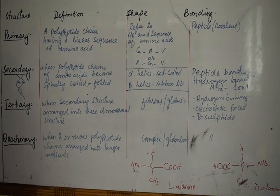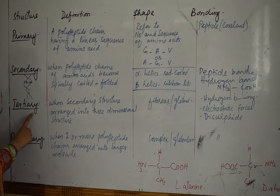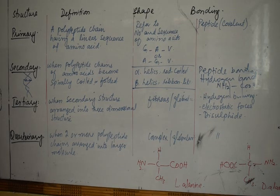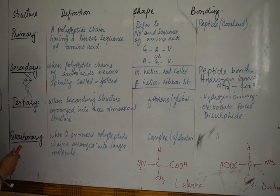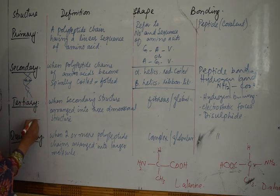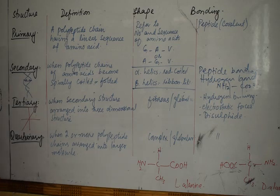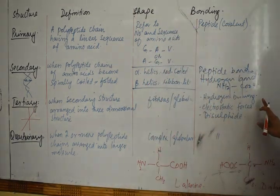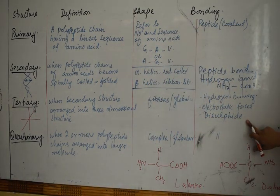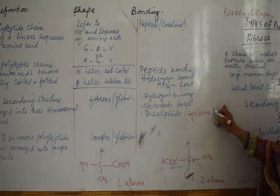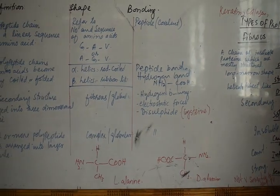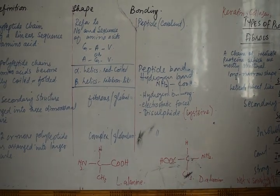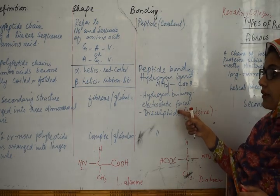The third is the tertiary structure. The secondary structure arranged into a three-dimensional structure is called the tertiary structure. Examples include fibrous proteins and collagen. The forces stabilizing the tertiary structure include hydrogen bonding, electrostatic forces, and disulfide linkages. Disulfide bonds are formed between sulfur atoms linked with sulfur. One important stabilizing interaction is the electrostatic force.